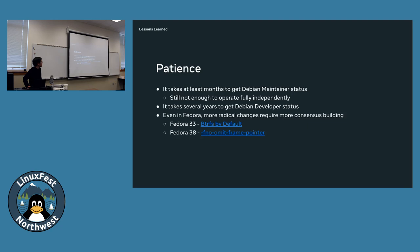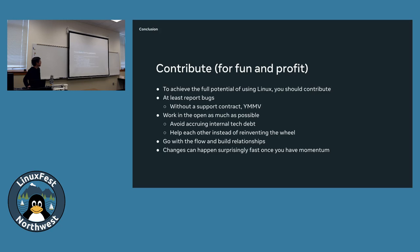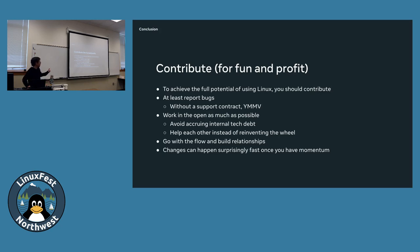Frame pointer support landed in Fedora 38 under the promise we'd review it — if it was disastrously slow, we'd rip it out. It only became settled with Fedora 40 when nobody was complaining. You should contribute. If you don't have time, at least report the issues you find. Don't do things internally as much as possible because you'll just reinvent the wheel and nobody will want to maintain it long-term. You need to work with the community, build relationships, and it's easier to do things once you know people.